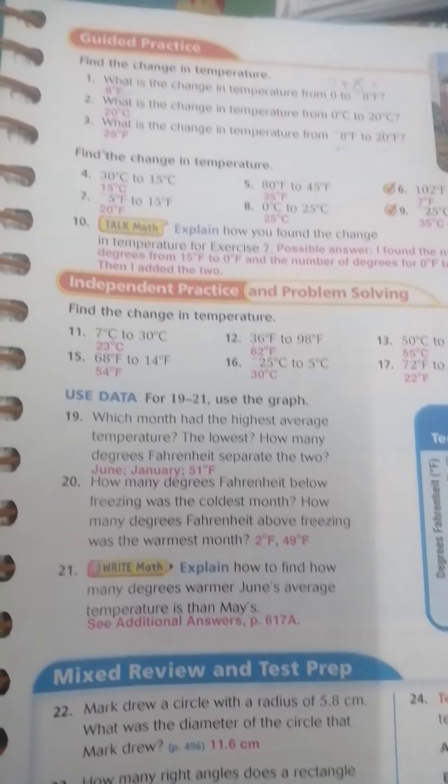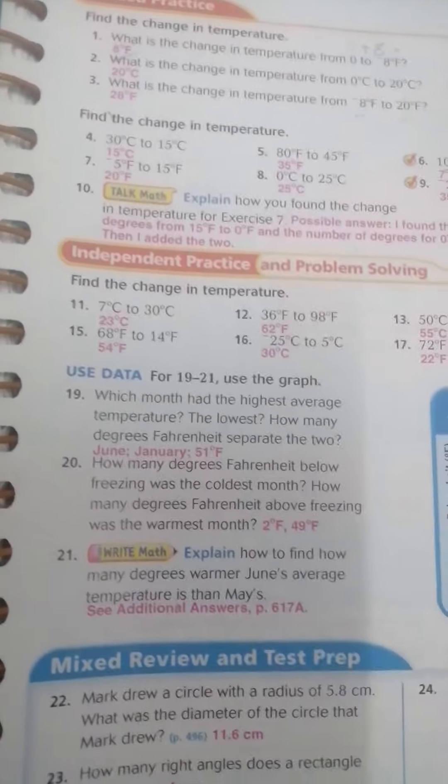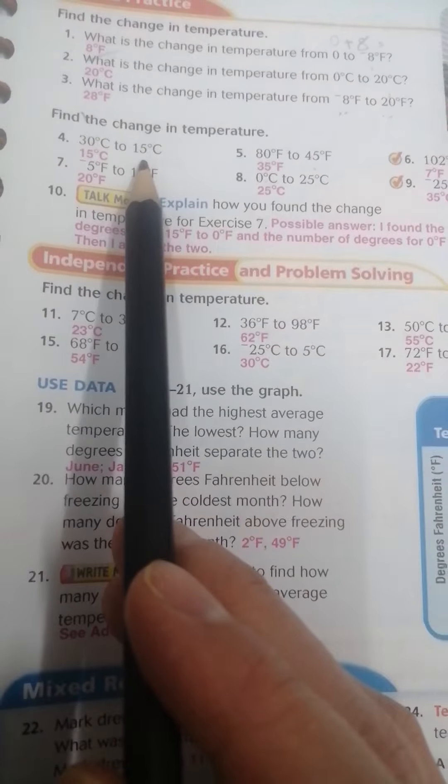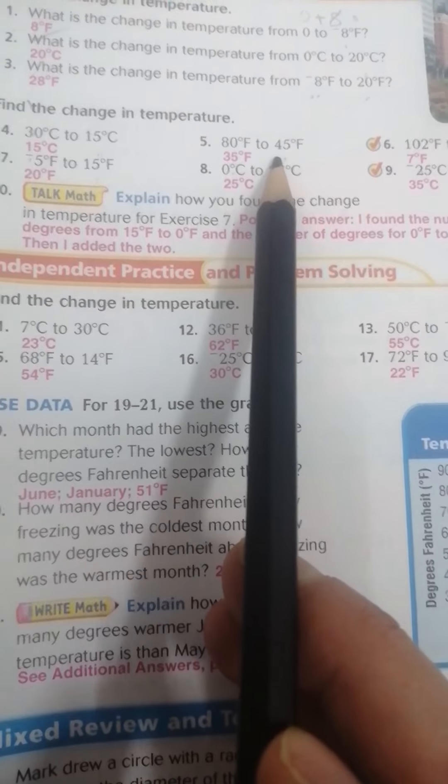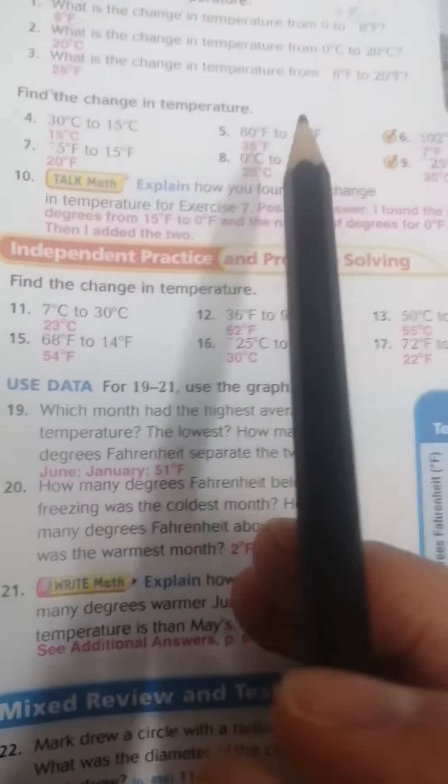Here, find the change. 30 to 15. Here, 30 is biggest to 15. Negative or minus. Make minus. Then 30 minus 15 equals 15.